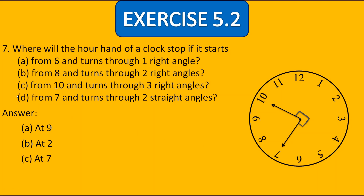In D, it starts from 7 and turns through two straight angles. Note: these are two straight angles, not two right angles. Two straight angles means four right angles, so it will reach again at 7. The answer for D is at 7. Here Exercise 5.2 comes to an end.